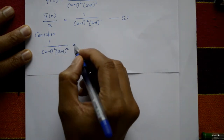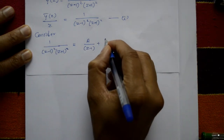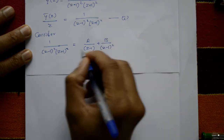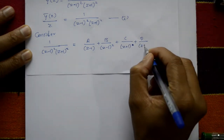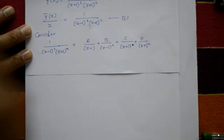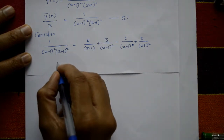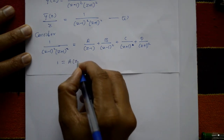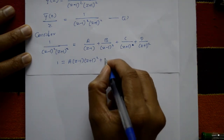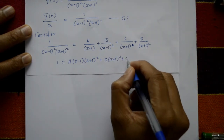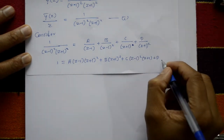Using partial fractions: 1/[(z−1)²·(z+1)²] = A/(z−1) + B/(z−1)² + C/(z+1) + D/(z+1)². These are repeated linear factors. Taking LCM and cancelling denominators: 1 = A(z−1)(z+1)² + B(z+1)² + C(z−1)²(z+1) + D(z−1)².